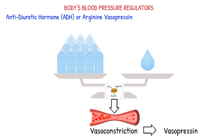The question is: how does this hormone regulate blood pressure? To understand this, let's start with the basic concept of water balance regulation and homeostasis.